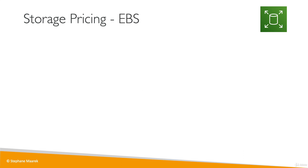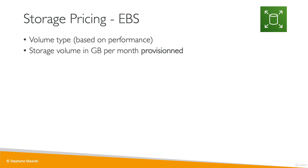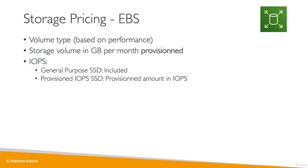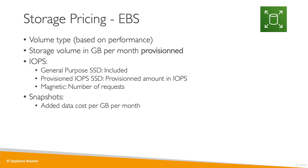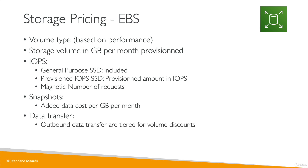EBS pricing works differently — you pay based on the volume type provisioned and its performance, and the size in gigabytes provisioned in advance regardless of use. For IOPS, general purpose SSD is included, but provisioned IOPS has an additional charge, and magnetic volumes charge per request. You also pay for EBS snapshots per gigabyte per month, and for data transfer out of EBS, which is tiered for volume discounts. Inbound writes to EBS are free.